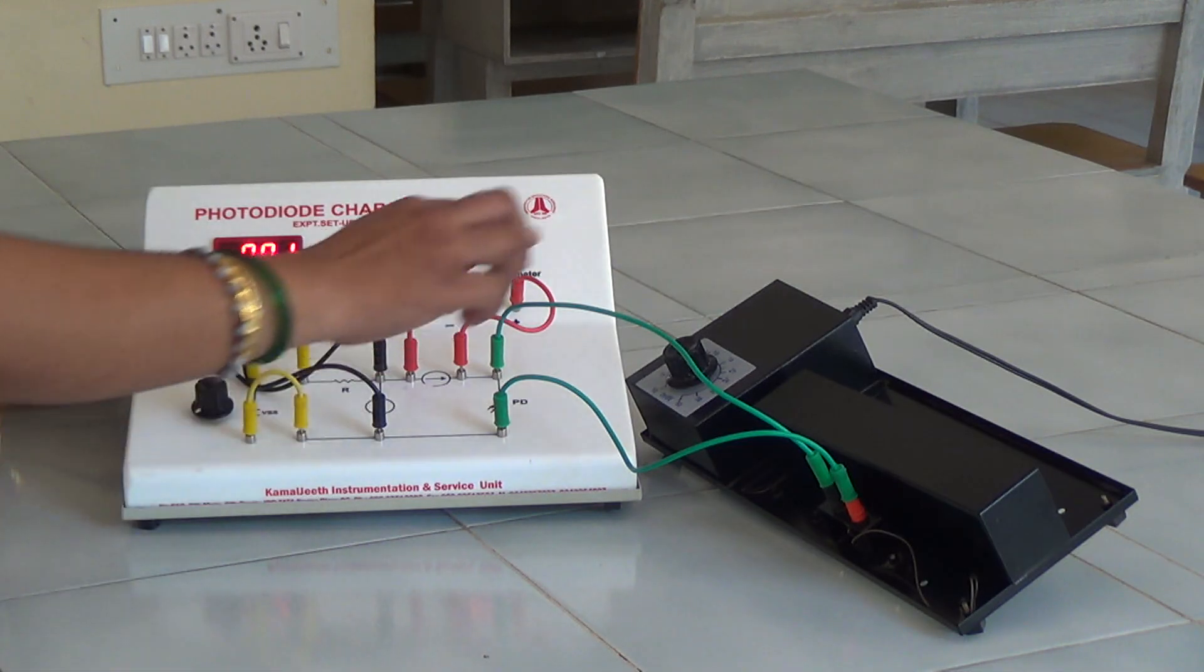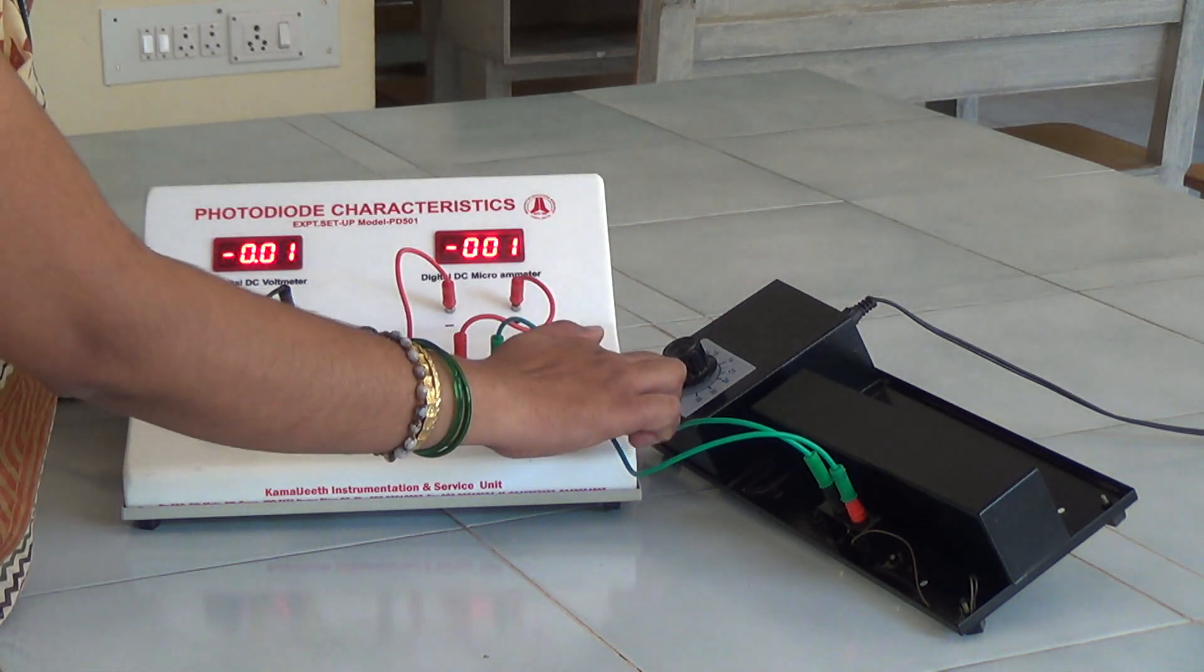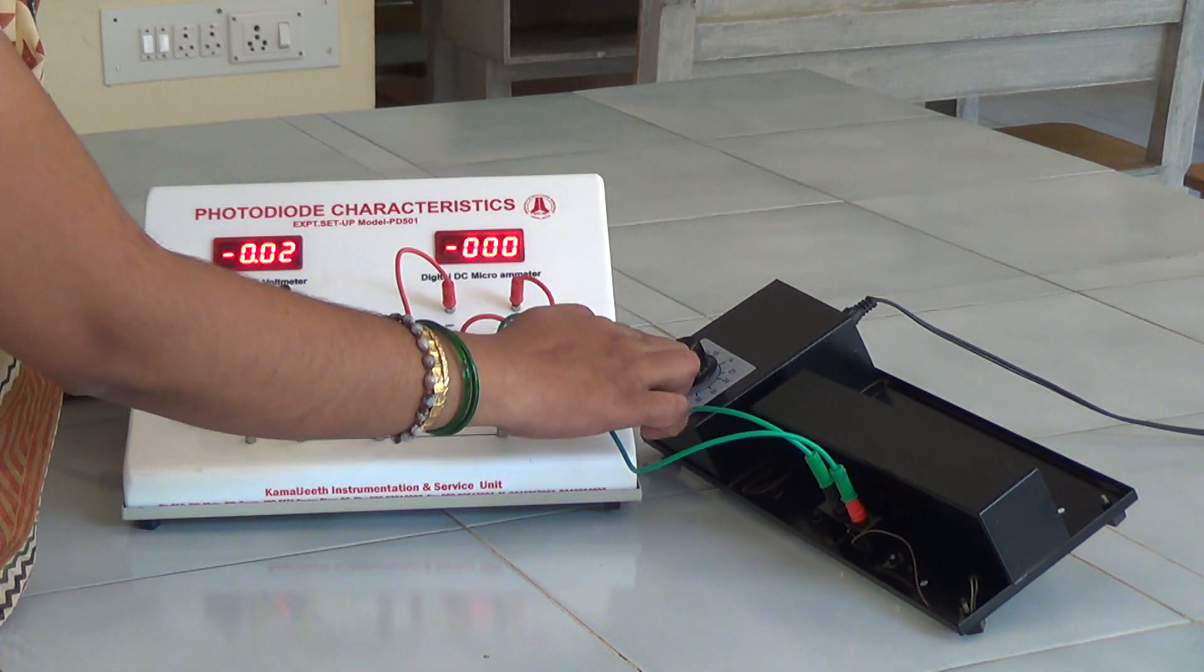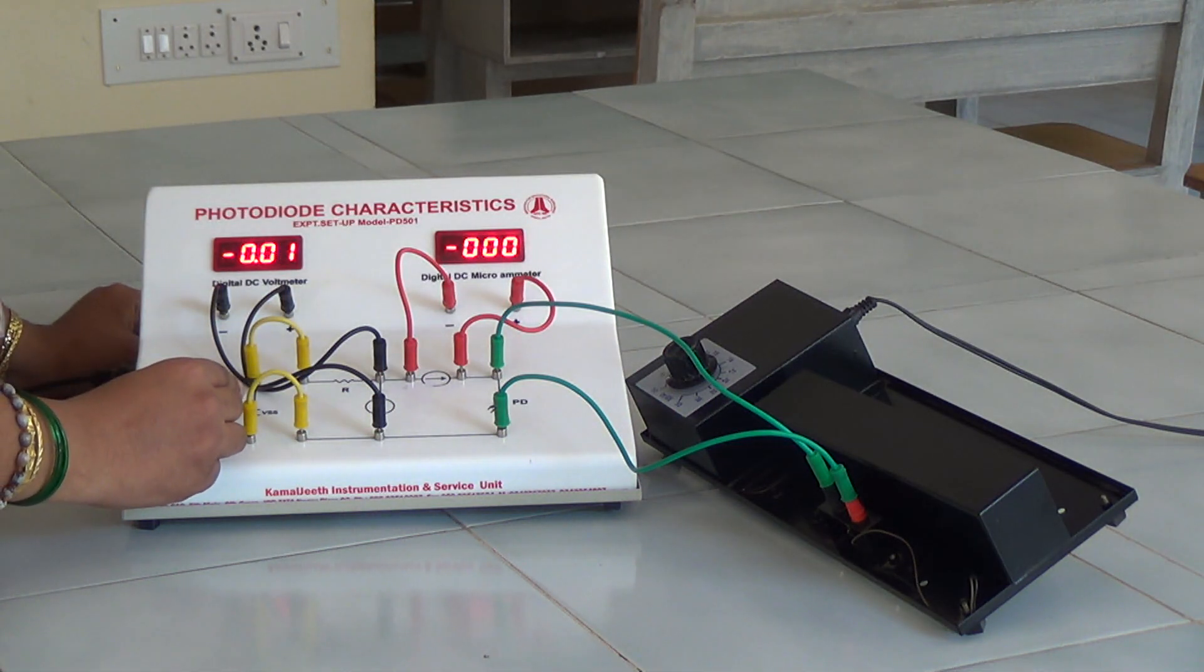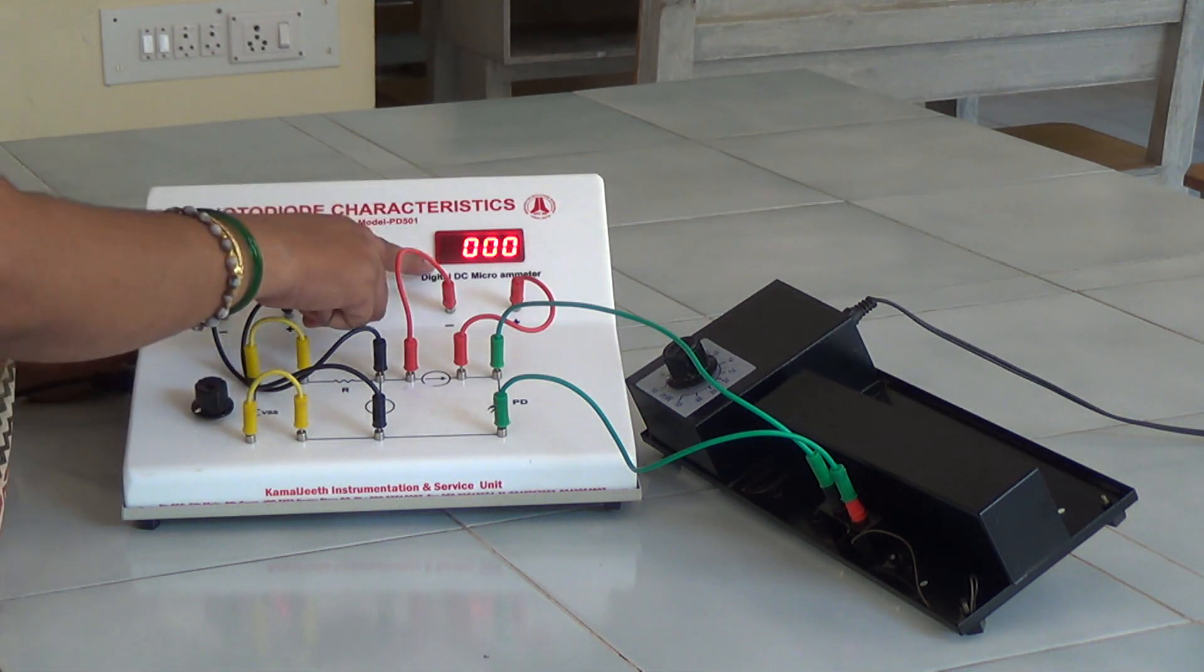After we make the connection, we set the light intensity to 10 milliwatts using this knob. We vary the voltage using this knob. For different values of voltage, we note down the microammeter reading.